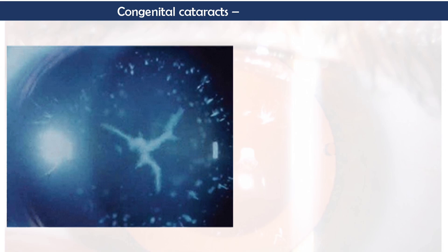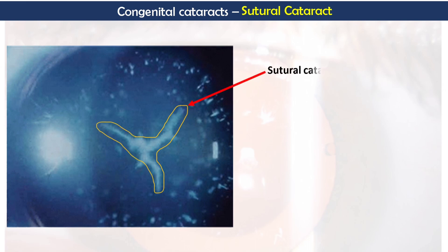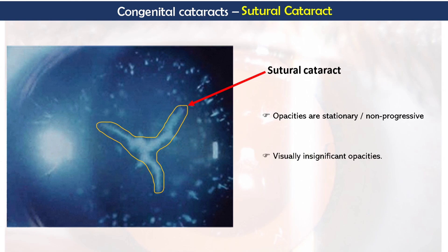Next is sutural cataract, which is actually a subtype of blue dot cataract. In sutural cataract, the opacity is crowded in the Y-shaped suture in the fetal nucleus of the lens. This is also stationary, not going to progress, and visually insignificant — it does not affect vision.